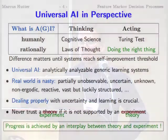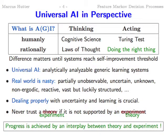So what is Universal AI about? Universal AI is an analytically analyzable generic reinforcement learning system — formal and simple enough, yet generic. The real world is nasty: partial, unobservable, uncertain, unknown, non-ergodic, reactive, vast. Luckily, it's structured. Universal AI deals with really complex environments, and at least in this rational-acting corner, dealing with uncertainty and learning is absolutely crucial.